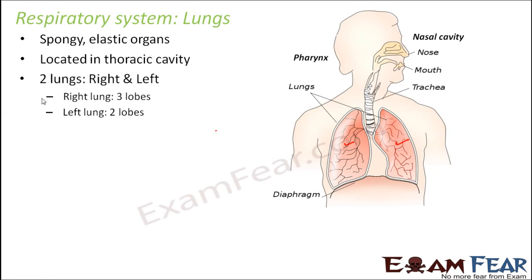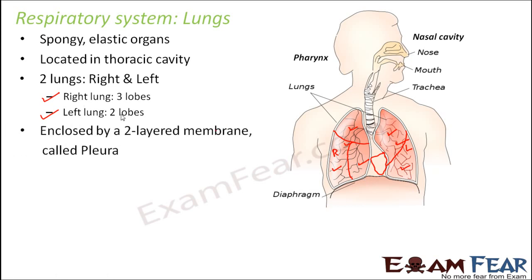The right lung has three lobes and the left lung has two lobes. The right lung is divided into three lobes, while the left lung is divided into two lobes. Near the left lung there is a small notch, which is the space where the heart is located.